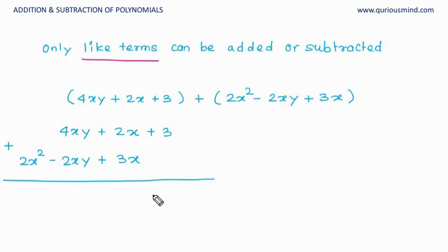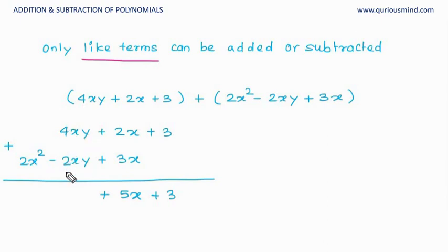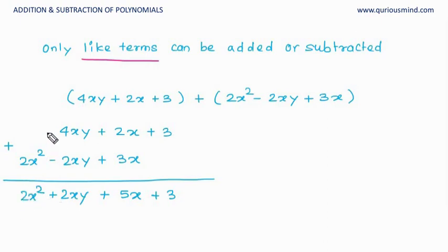Now we add them. The constant 3 has nothing to add, so it remains plus 3. 2x plus 3x gives us 5x. For plus 4xy minus 2xy, treat xy as one variable — 4 minus 2 gives plus 2xy. And 2x square remains as it is. So this is your answer for this addition.